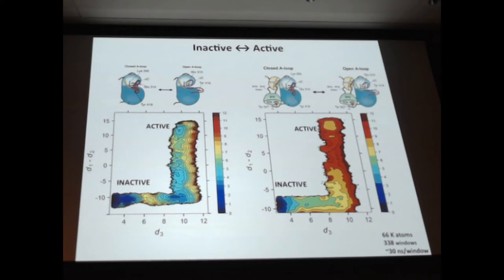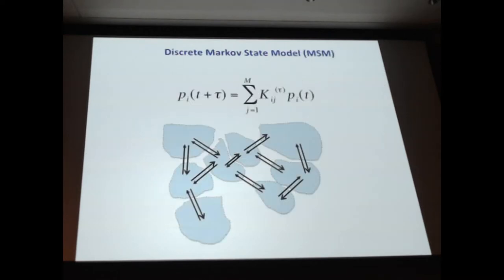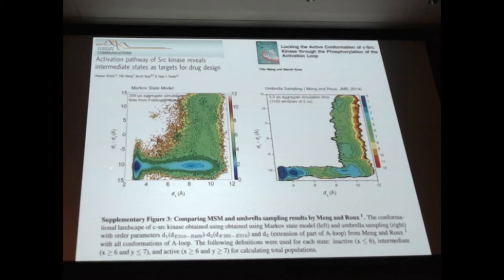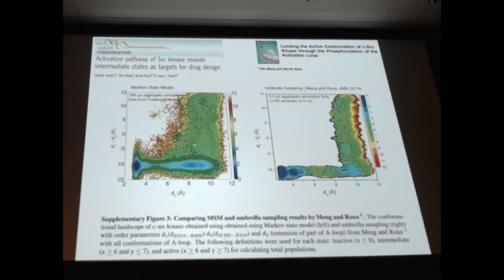We repeated that study using Markov models, which you are all familiar with by now. This is a paper that was mostly led by Diwakar Shukla and Yiling Meng in collaboration with Vijay Pandey. This is the motion of the activation loop again, and it's making a kind of transition every 95 microseconds based on the sampling. If you map the Markov model in the same coordinate I showed you before - this was umbrella sampling, and this is the Markov model - it's like 350 microseconds against 5 microseconds of replica exchange. This was actually able to capture the general gist of it, and in large part they're very consistent.